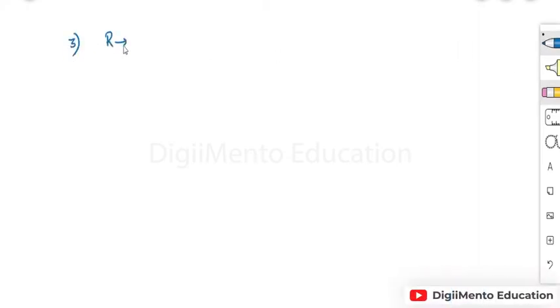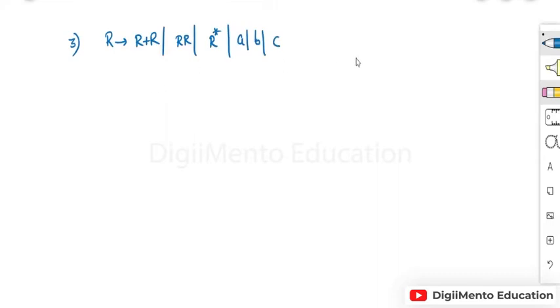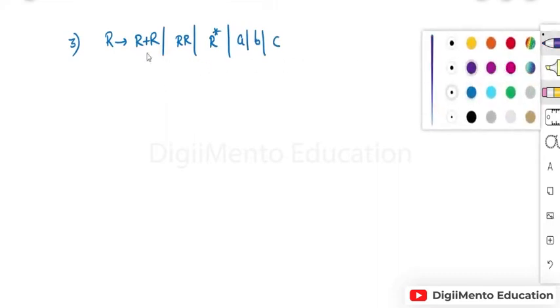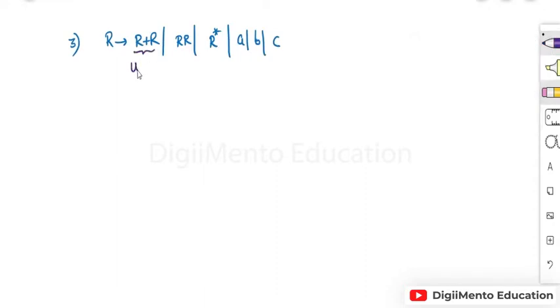Suppose the given grammar is like this. If you see carefully, this operation is union operation, this operation is concatenation, this is Kleene closure, and these are the terminals.